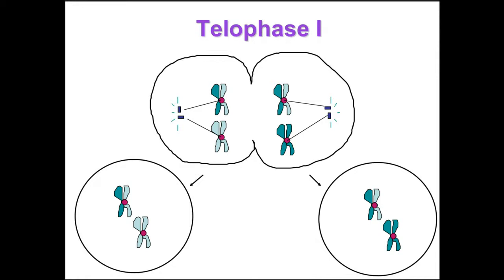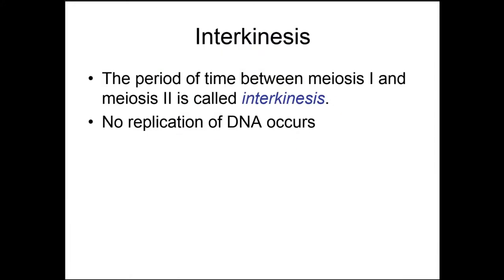When we reach telophase one and cytokinesis one, we have completed meiosis one. Interkinesis is a period of time between meiosis one and meiosis two where the cell will take a break before starting the next round of cell division. No replication of DNA occurs in interkinesis, and not all cells will undergo an interkinesis.